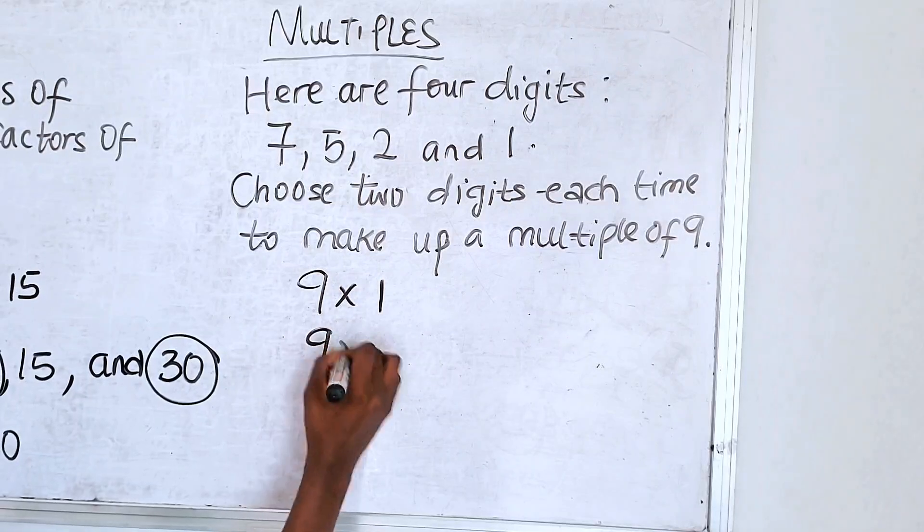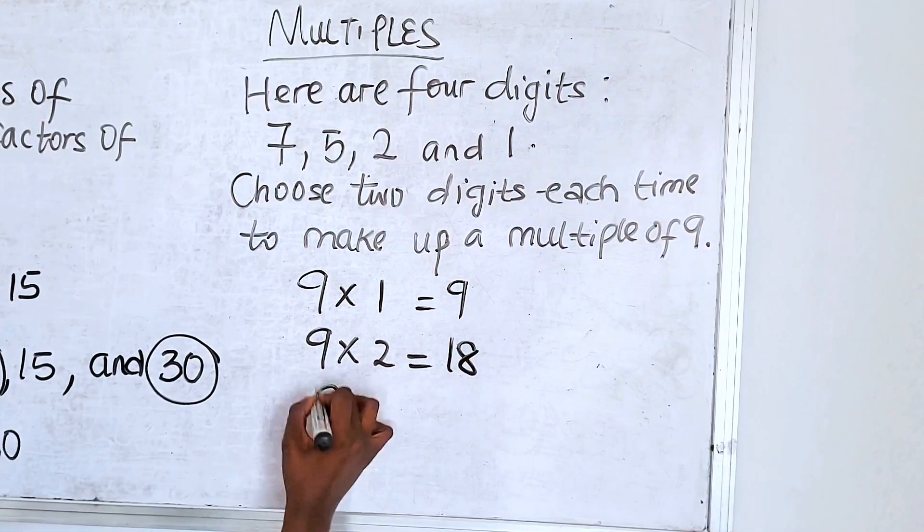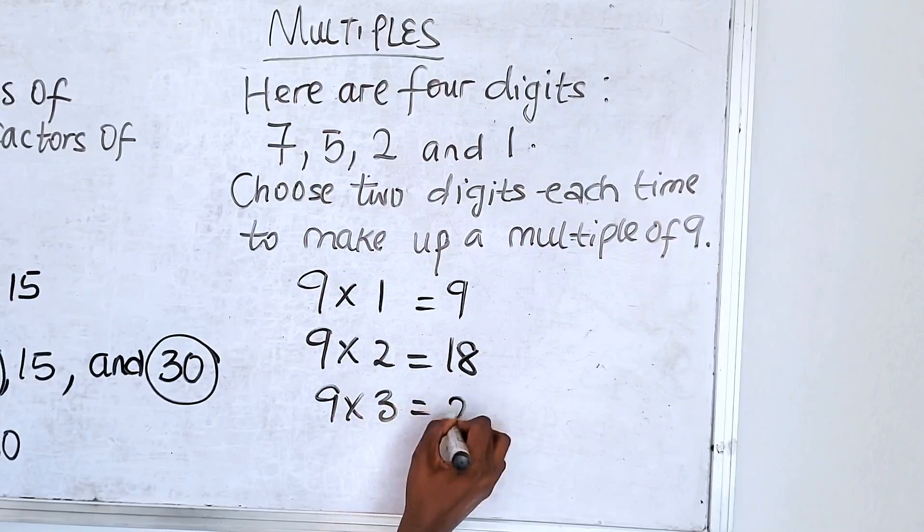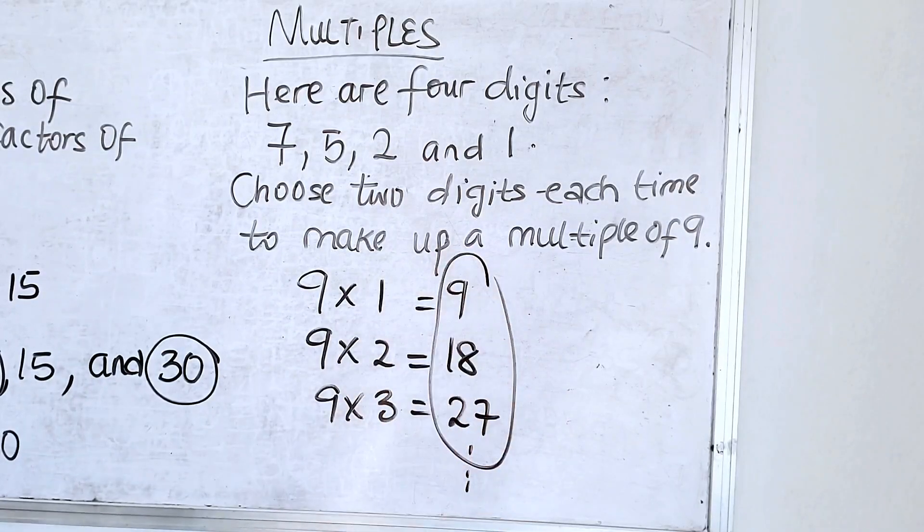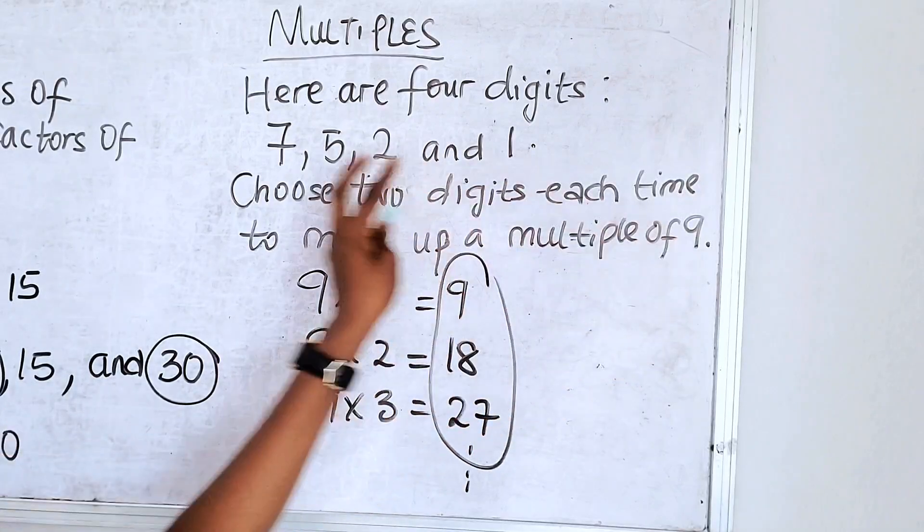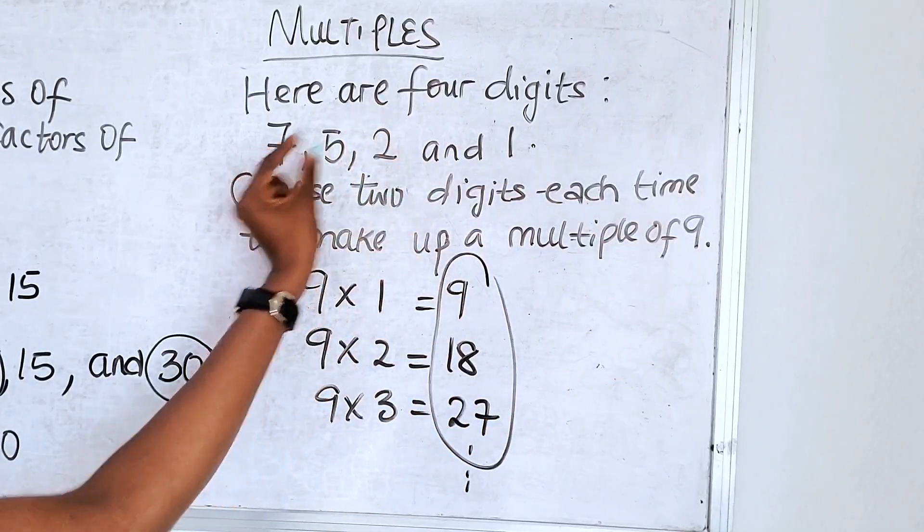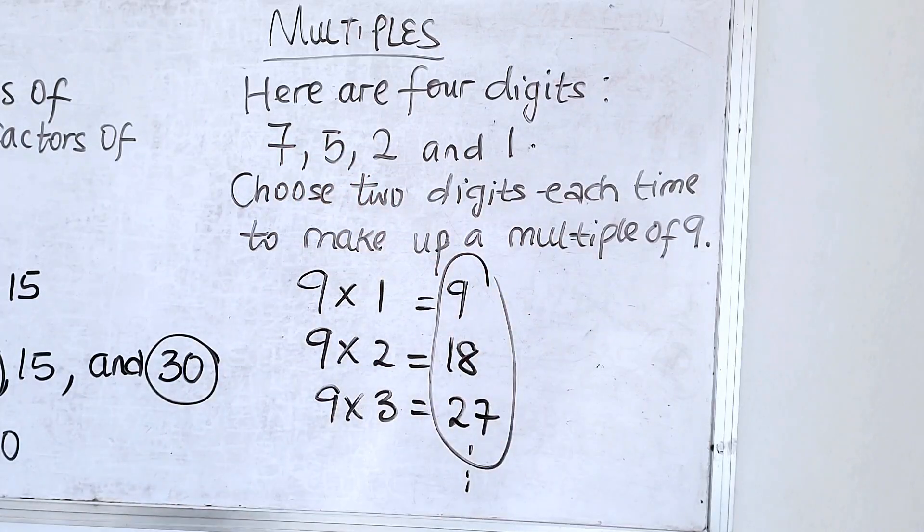What are the... you know we said that these are multiples. You have to keep going and then whatever you get here are your multiples. So you have to know your multiplication table for 9 to be able to form, they said pick 2 digits here to give you multiples of 9.